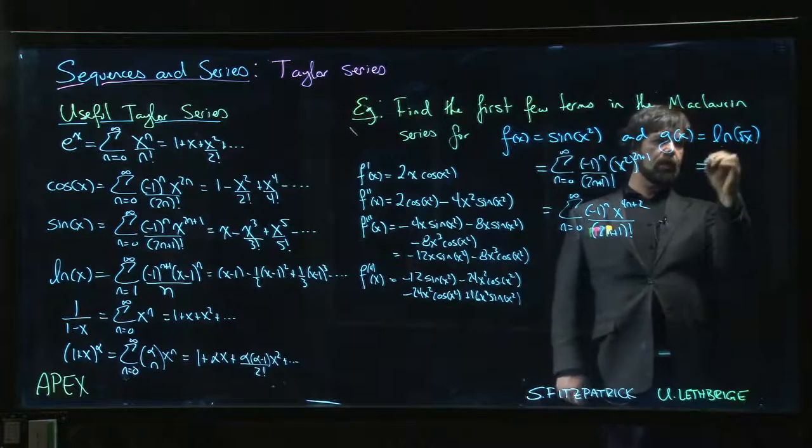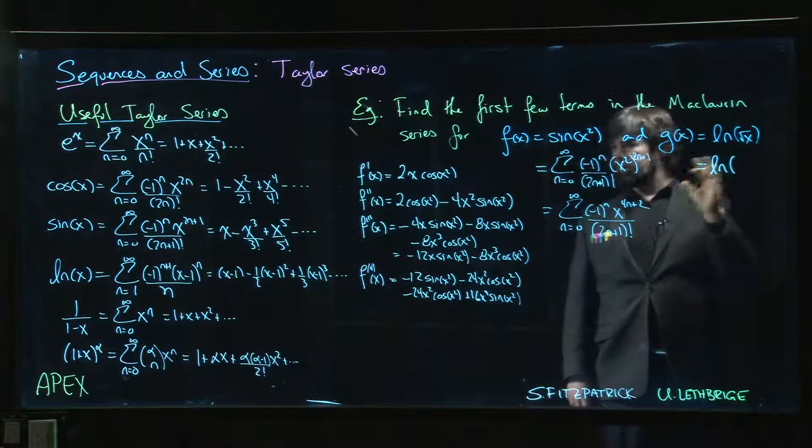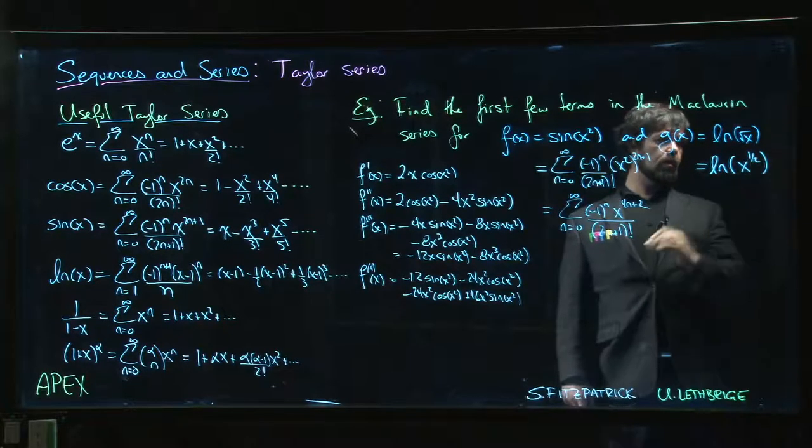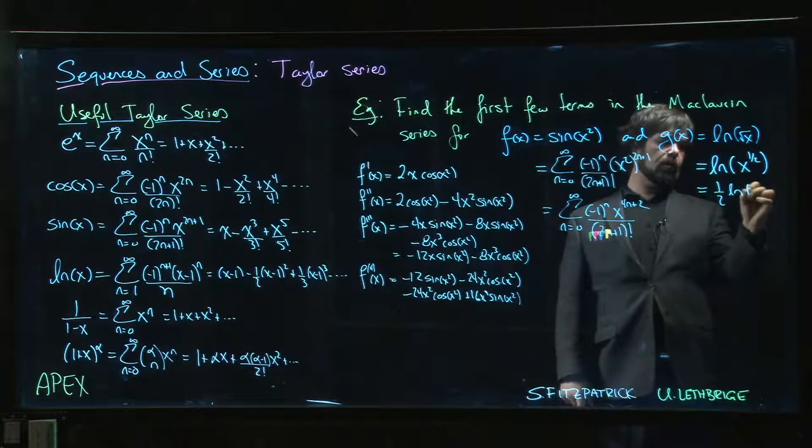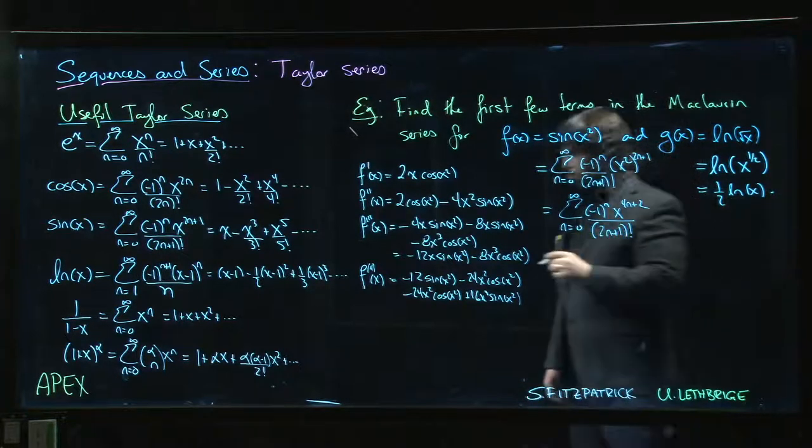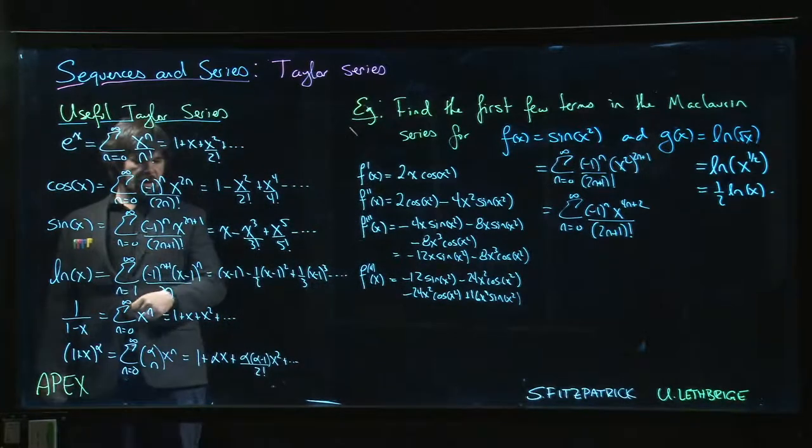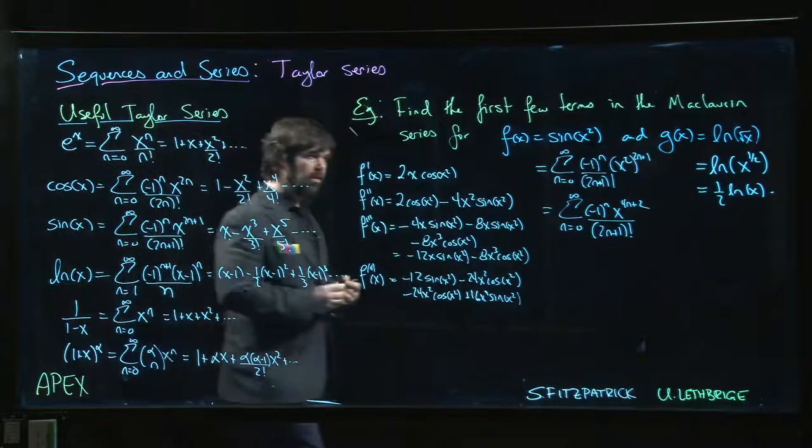But there's actually a way to do this one without any work at all. It doesn't require Taylor series, it doesn't require any of this. It requires remembering a little bit about properties of logarithms. √x is x^(1/2), log of x^(1/2) is (1/2) log(x). Done. Take the power series for log, multiply by 1/2. That's it, put a 2 down there, that's all you need to do.